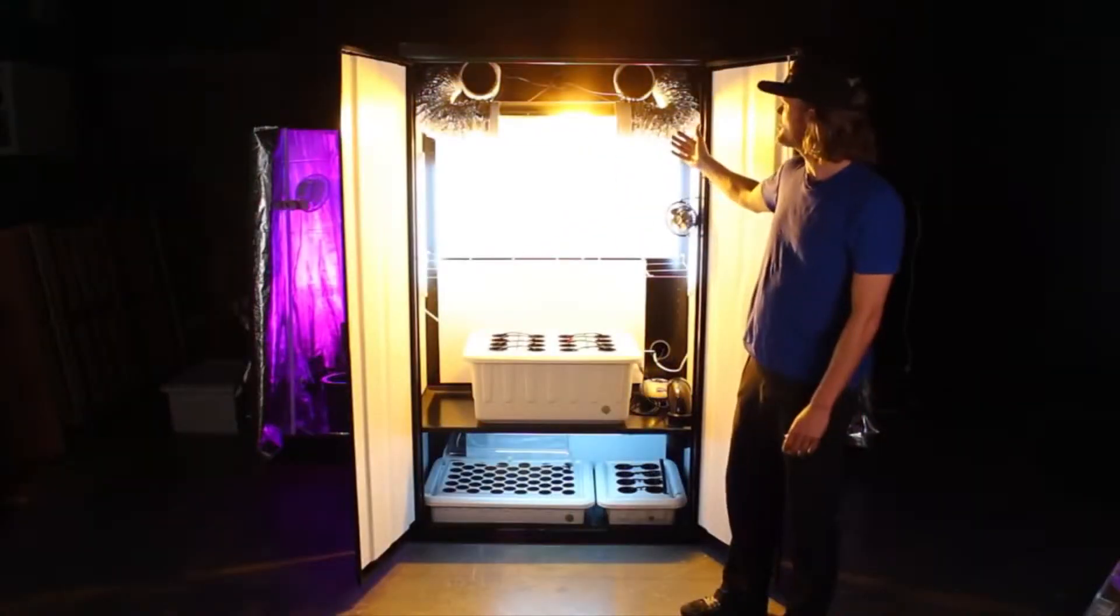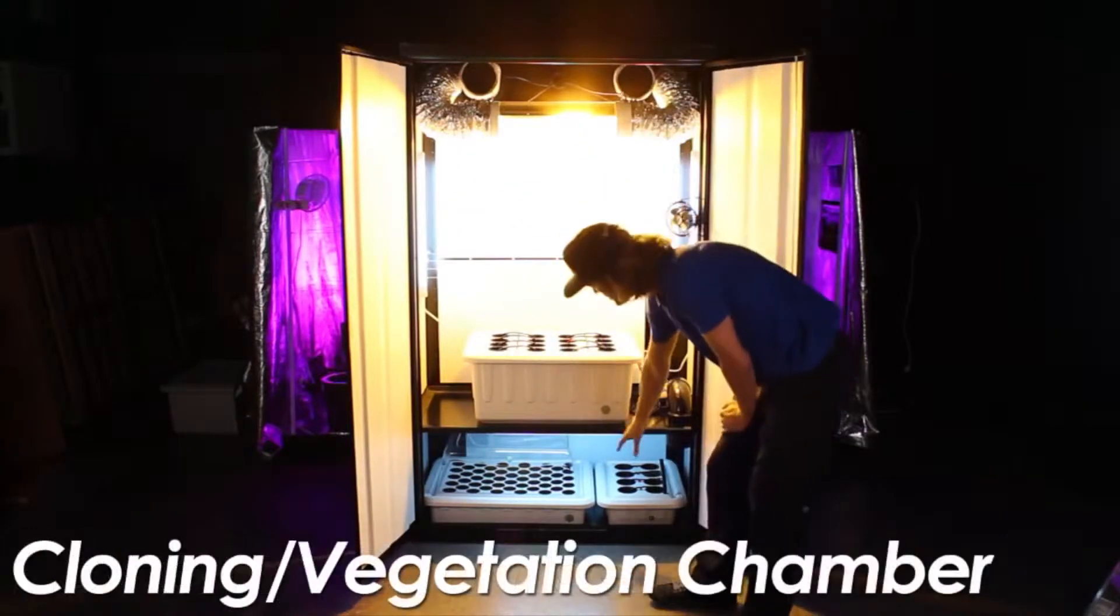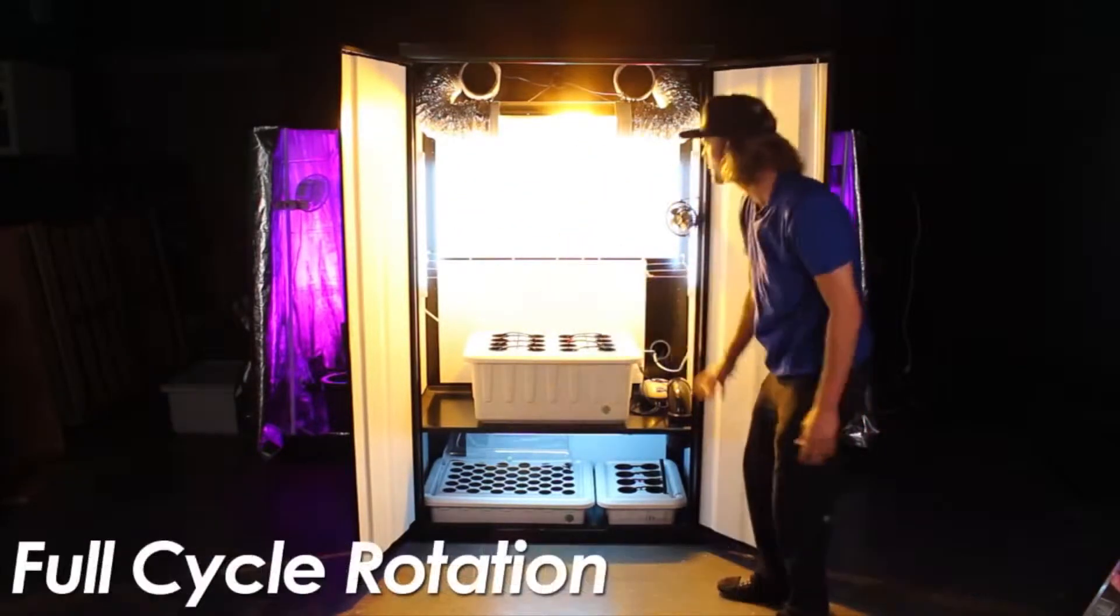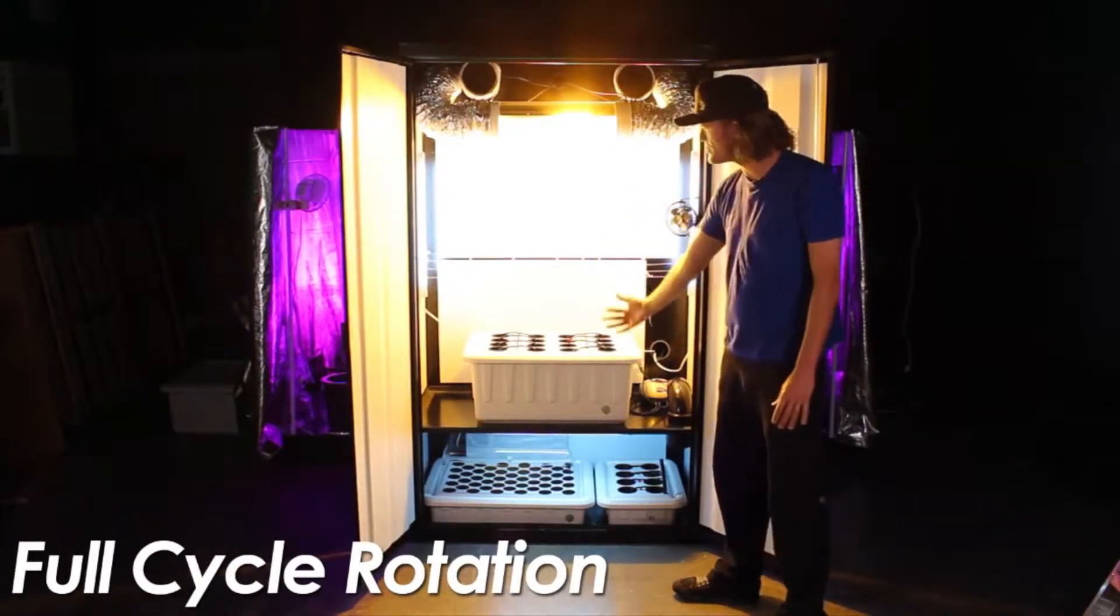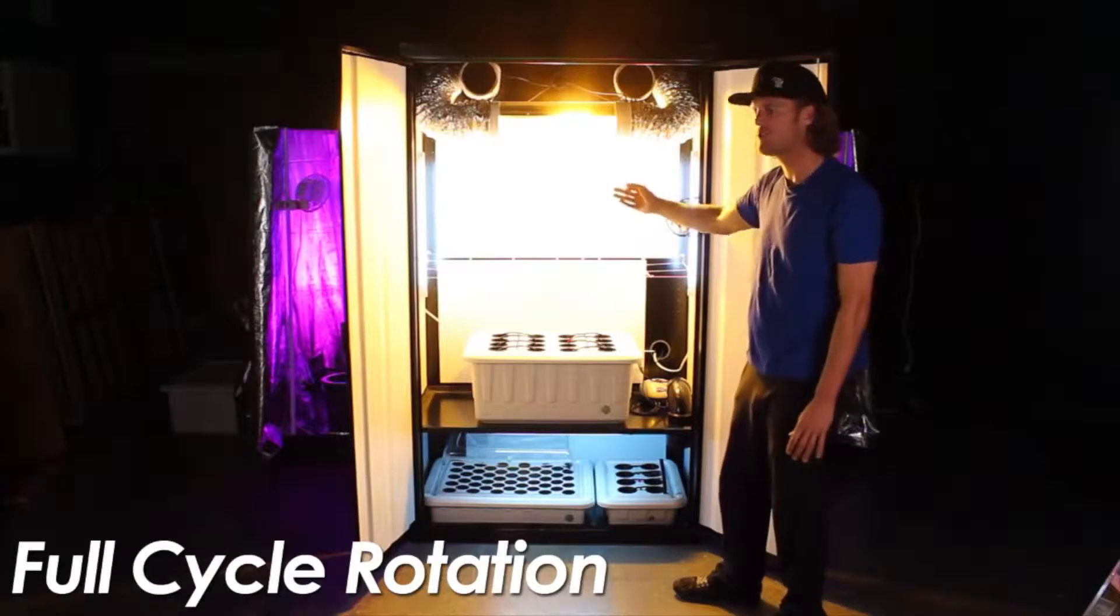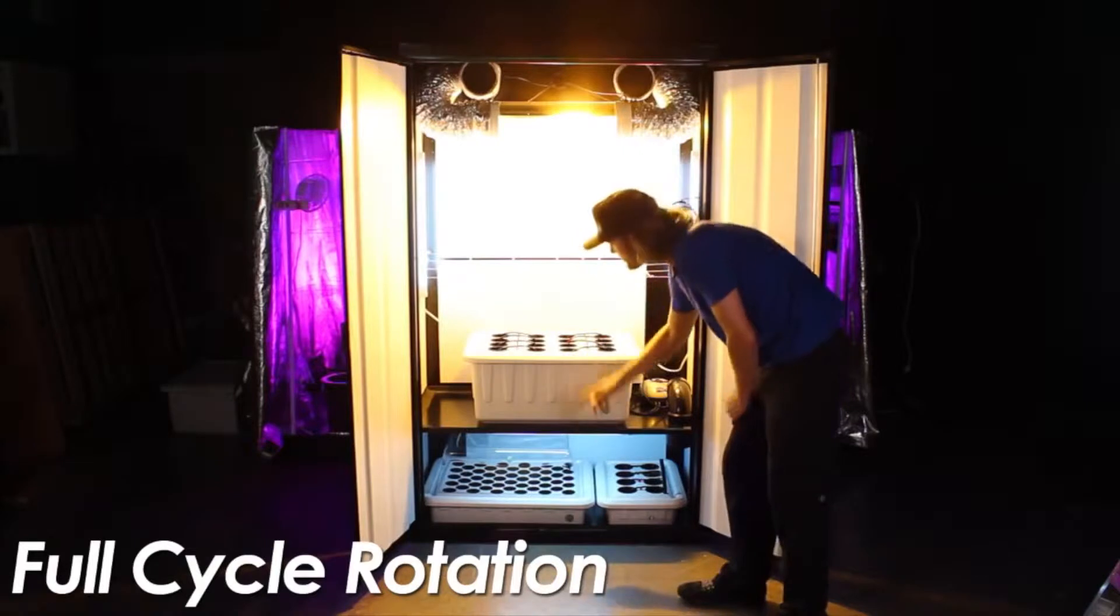This growing machine features a huge flowering chamber and a separate cloning vegetation chamber with full rotation, where you pull down clones and bring them up top, take cuttings, and put those down below.